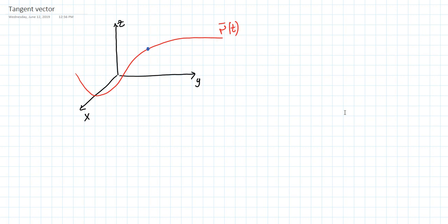Let's say we're given some point at parameter t. This point is given with a vector — we can write this as the vector R of t at some point t.